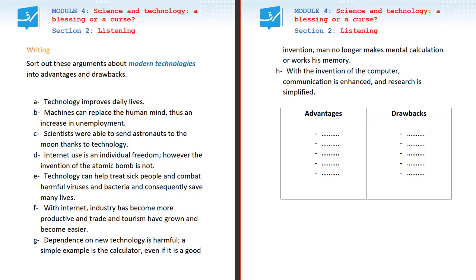Statement A: 'Technology improves daily lives.' So what do you think? Is it an advantage or a drawback? So here, you put it under advantage. It improves things, it makes life better, easier.